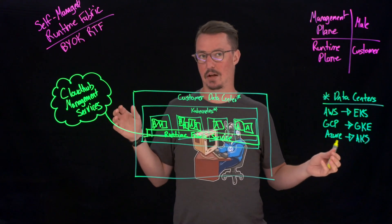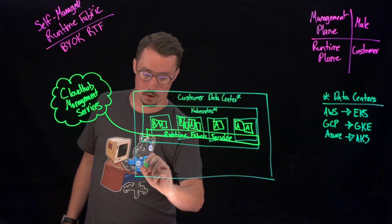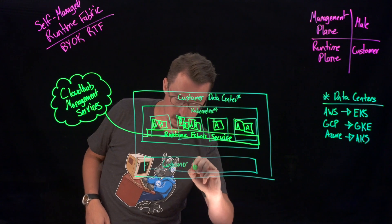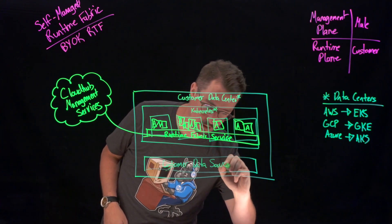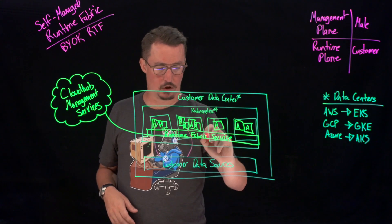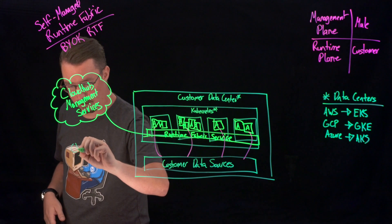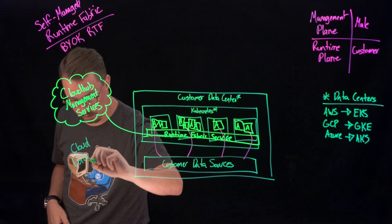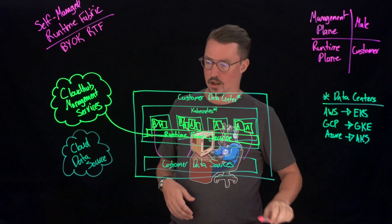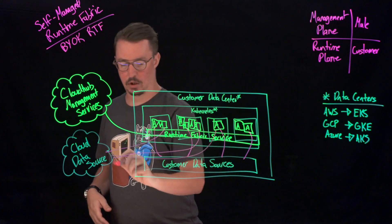We don't yet have any data sources that these applications are connecting up to, so let's dive into how we can actually do that. Within our data center, we might have self-contained customer data sources. If they're within the same data center, we simply need to connect up these applications to the ones that need to connect. We also need to make sure that our applications connecting up to cloud data sources have that level of connectivity — they need to be able to come outside of their data center and reach out to the cloud data sources as well.